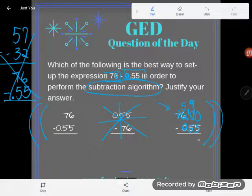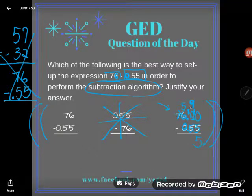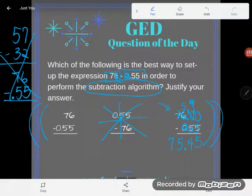And now I can subtract 10 minus five is five. Nine minus five is four. Five minus zero is five. And a seven minus nothing down there is seven. And so if I were to perform the subtraction, it would be 75.45.